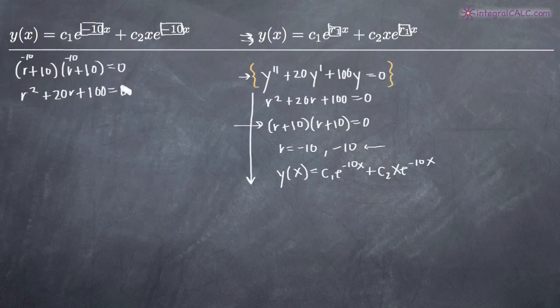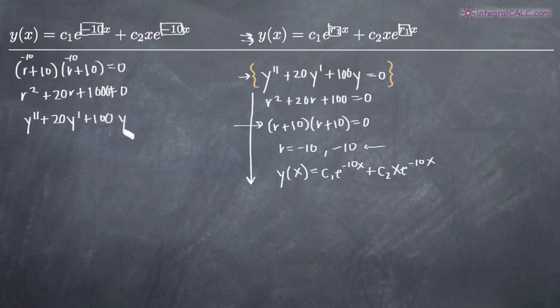And then from that point, you would just go ahead and replace the r squared, r and this implied 1 right here with this y double prime, y prime and 100y equals 0 and that's the way that you would work backwards.